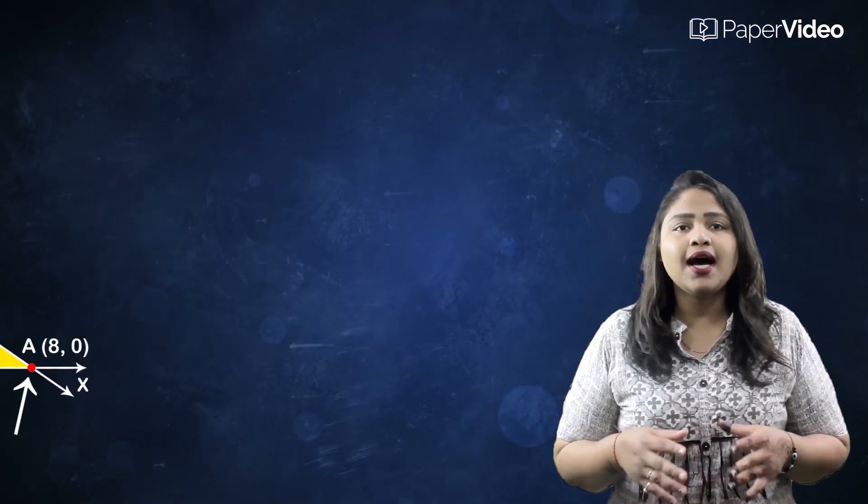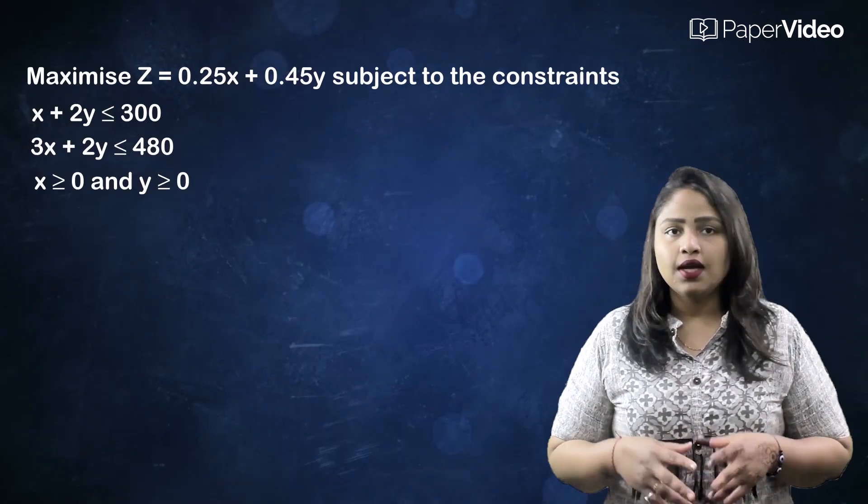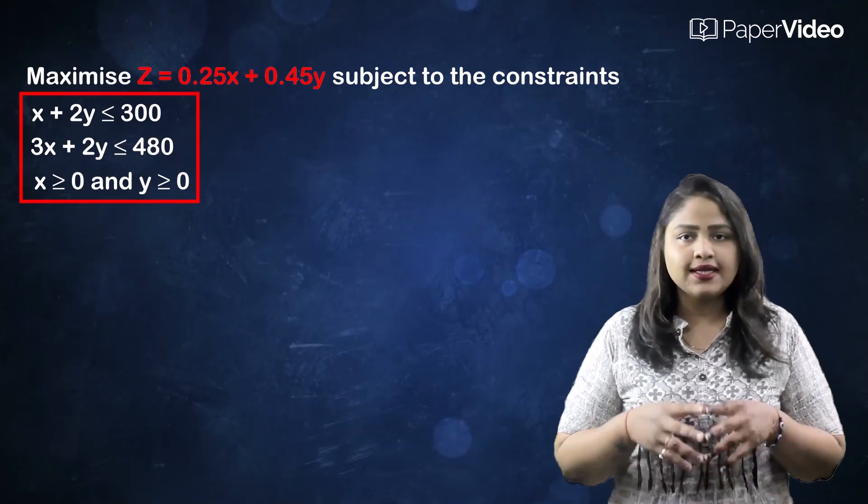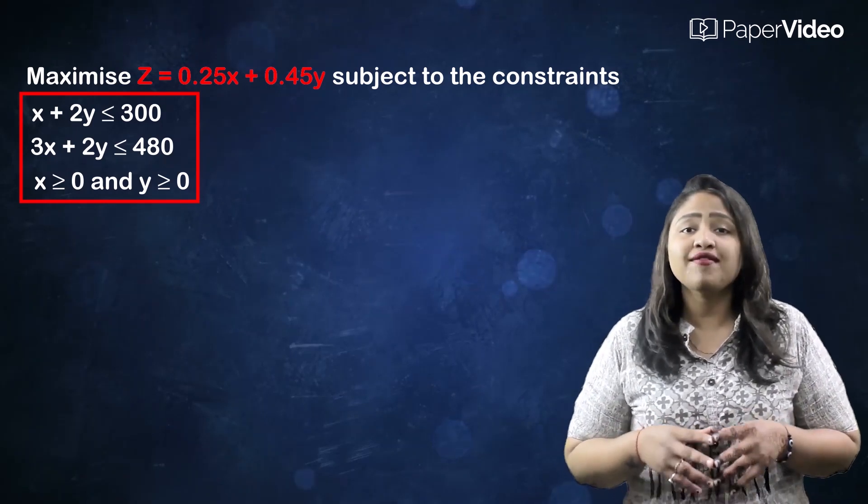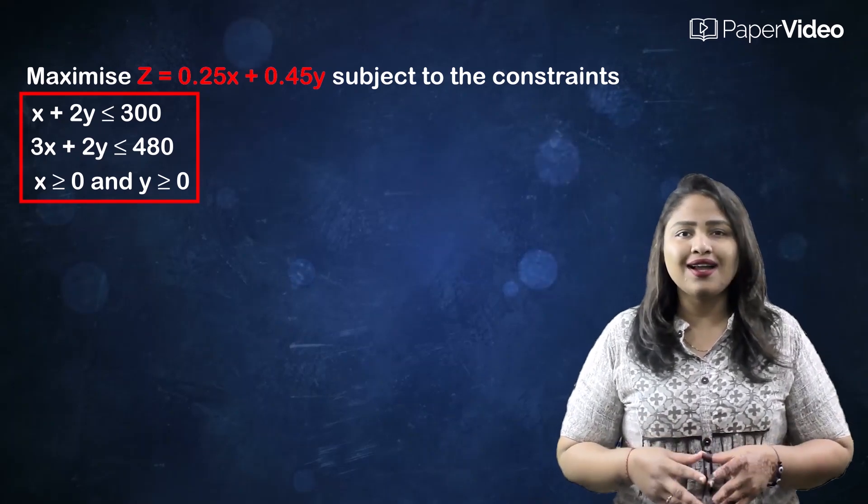Let us now understand how to solve a linear programming problem with an example. Consider this linear programming problem. In this problem, z = 0.25x + 0.45y is the objective function and these inequalities are the constraints.